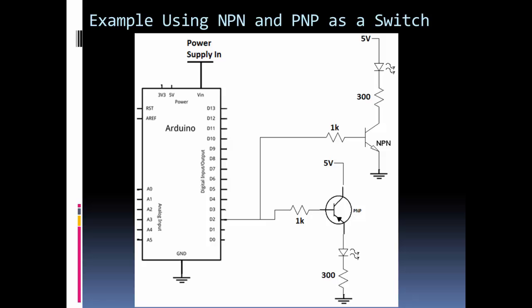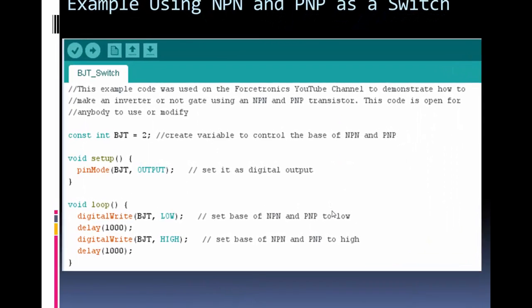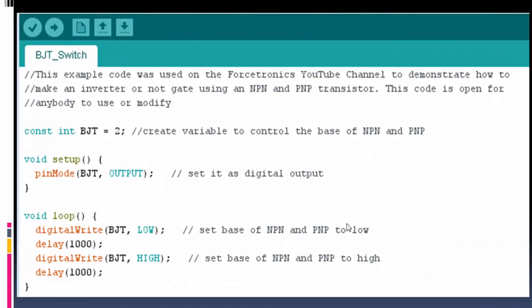So here's our setup. I'm going to show the code. The code is very simple. I just set pin 2 to output, to a digital output. I then toggle it low and then high, and I delay for a second in between each. So let's take a look at the video to see this example in action.